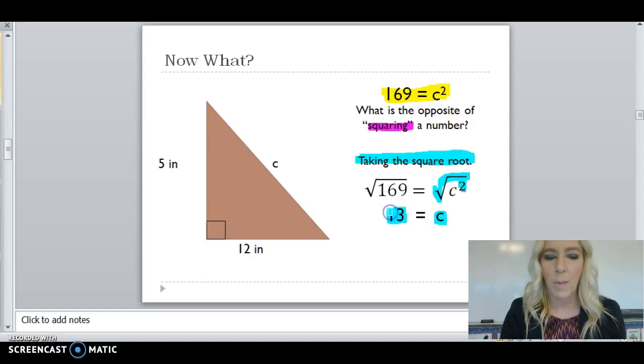So, you can go back and check your work. 5 squared plus 12 squared equals 13 squared.